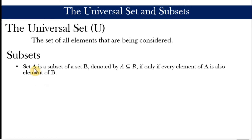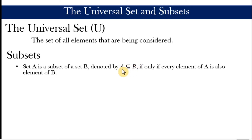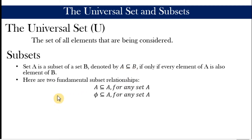Given two sets A and B, this is the symbol for subset, read as 'A is a subset of B.' A is a subset of B if and only if every element of A is also an element of B. If even just one element of A is not found in B, then A is not considered a subset of B.